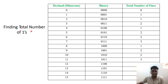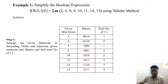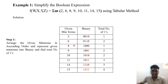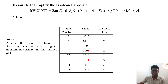Now let's look at an example. We show the decimal terms, their binary representation, and the total number of ones. For example, for minterm 5 the total number of ones is 2, for 6 it is 2, and for 7 it is 3. In Step 1, we simplify the Boolean expression using the tabulation method. We arrange the minterms in ascending order: 2, 6, 8, 9, 10, 11, 14, and 15, with their corresponding binary numbers. The total number of ones — marked in red — are: 1, 2, 1, 2, 2, 3, 3, and 4.